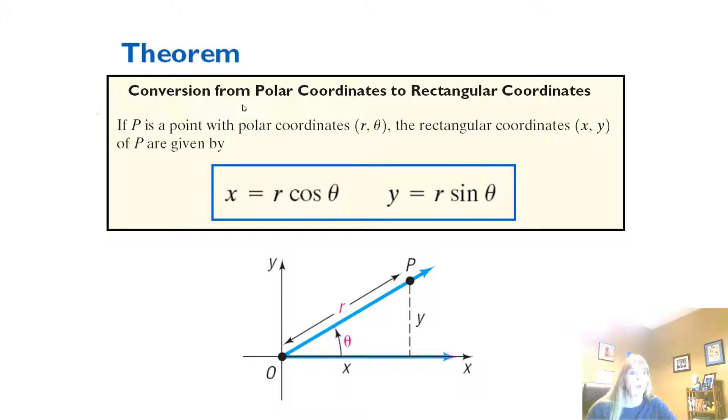And we are back. We were discussing polar coordinates. Remember that a point in polar coordinates is given by the radius and then the angle theta in radians. We can actually convert from polar coordinates to rectangular, and then you're going to see back again.